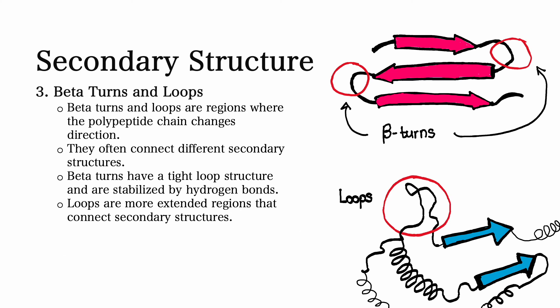There are also beta turns and loops. Beta turns and loops are regions in the polypeptide chain that change direction. They often connect different secondary structures together. Beta turns have a tight loop structure and are stabilized by hydrogen bonds as well, and loops are more extended regions that connect secondary structures.